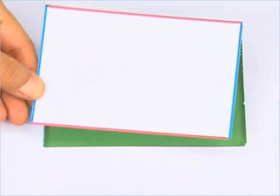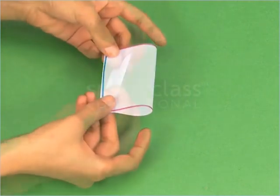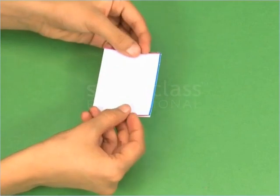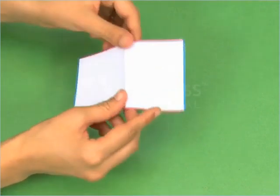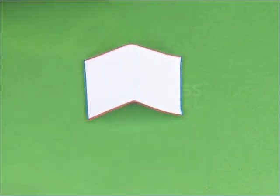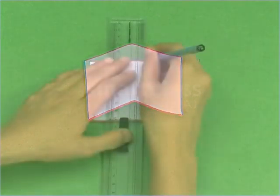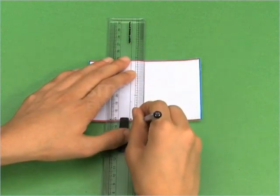Fold the rectangle so that its blue sides coincide. The two parts of the rectangle exactly coincide. Unfold the rectangle and draw a line on the crease. The line is the first line of symmetry of the rectangle.